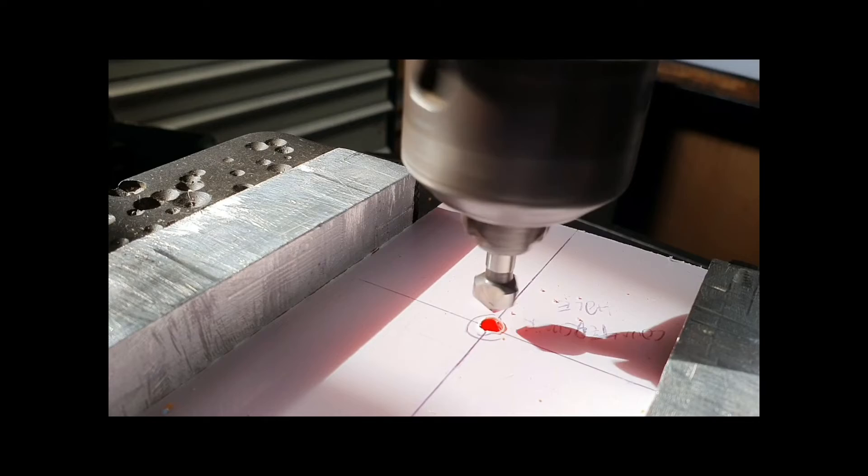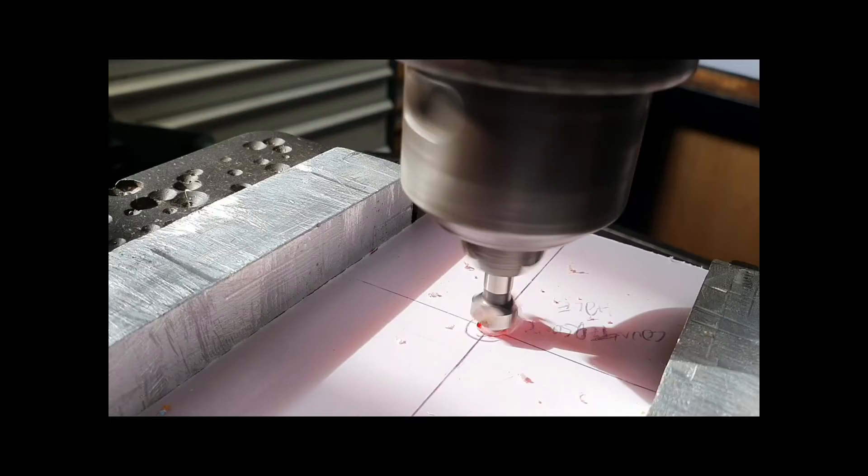Countersinking is a drilling process that allows a screw to sit flush with your workpiece. So if you see from the two pictures here, a countersink screw if it's not countersunk properly sticks out from the workpiece.